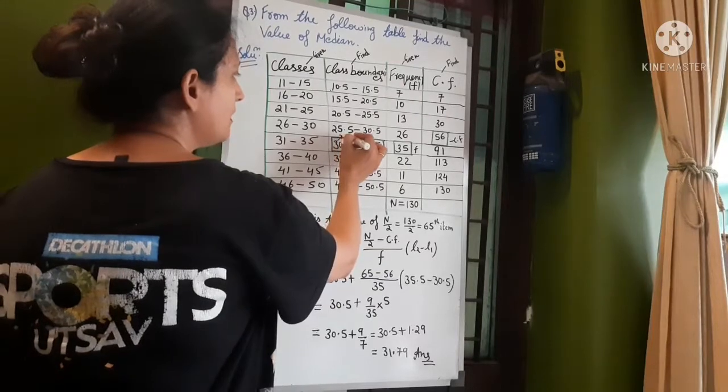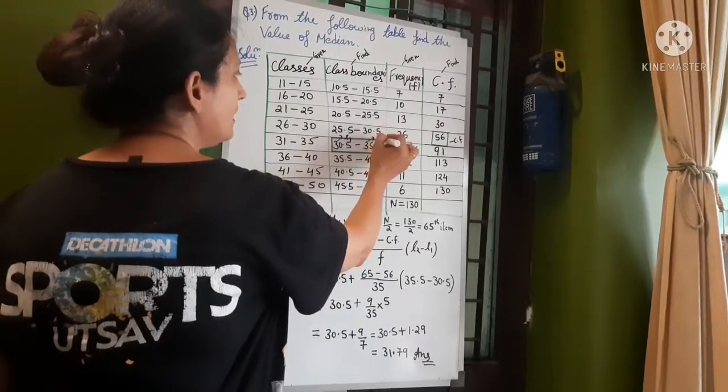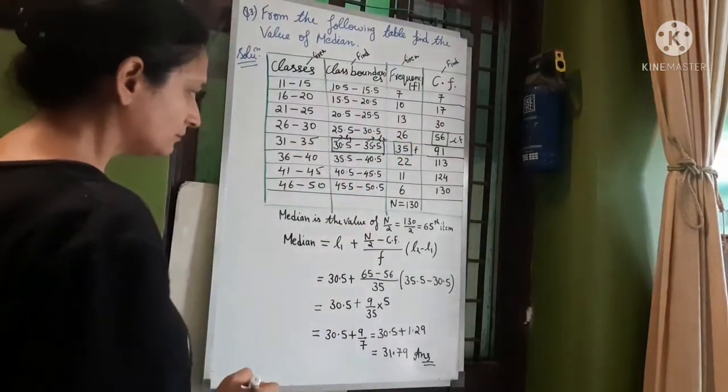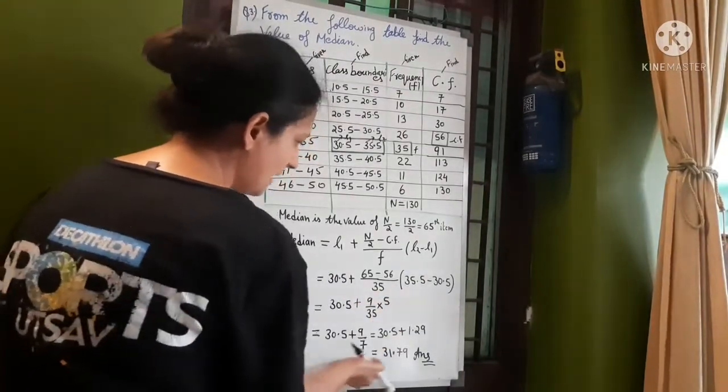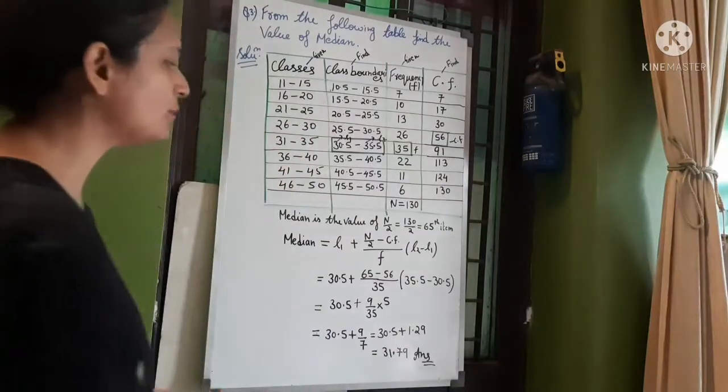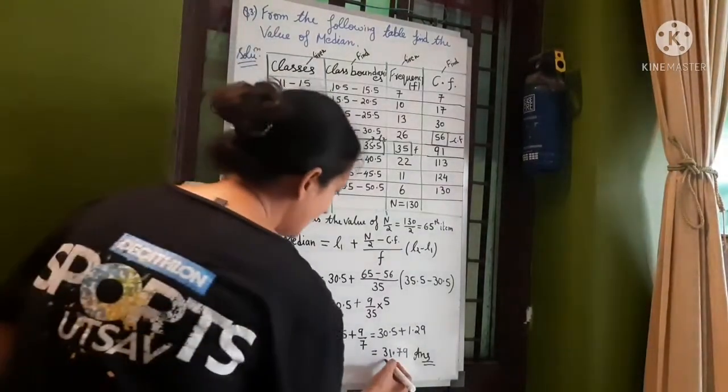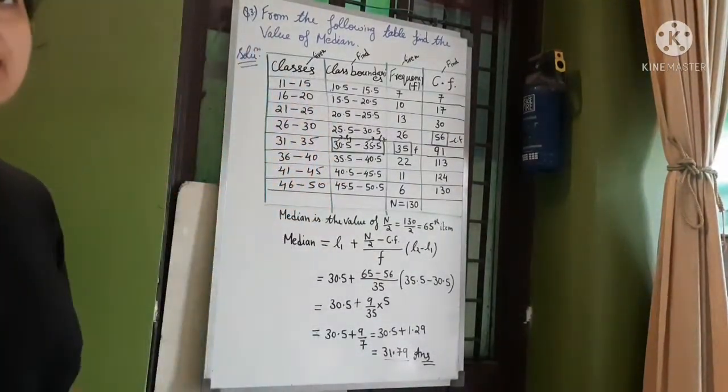l1 and this value is l2. Now these values are good. After calculation, answer will get 13.79. This is the median.